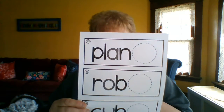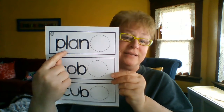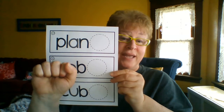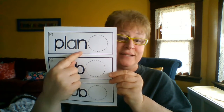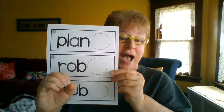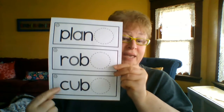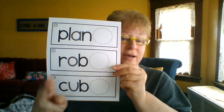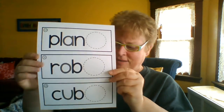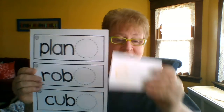Let's try one more sheet. So here we have pl — a blend — short a, 'ah', plan. Here we have short o, 'ah', rob. And here we have a short u, 'uh', cub. So we're going to add our silent e. And instead of plan, the e says to the a, 'what's your name?' and the a says 'my name is a'. So it becomes pl-ain, plain.